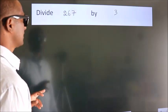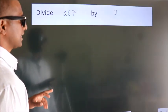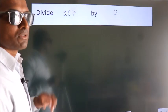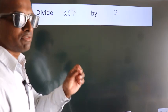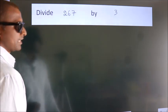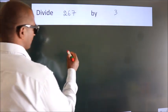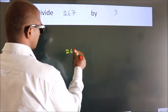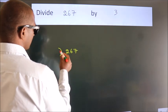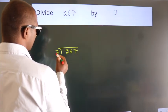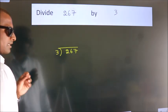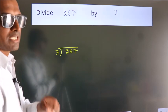Divide 267 by 3. To do this division, we should frame it in this way: 267 here, 3 here. This is your step 1.